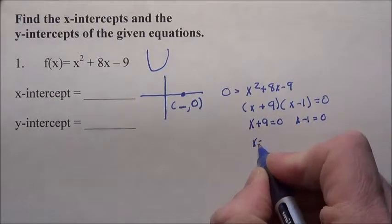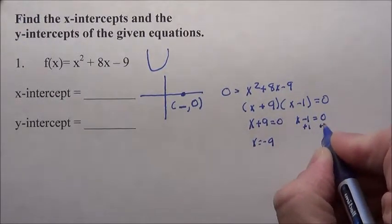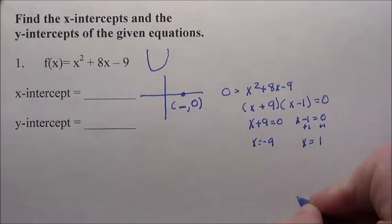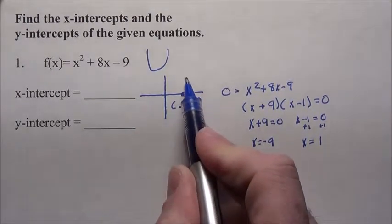Solving this, I get negative 9, add 1 to both sides, and positive 1. So it crosses the x-axis, remember it's a parabola, it's coming down.